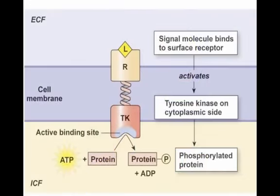Let's look at an example: a tyrosine kinase complex. This is the extracellular side; this is the cell membrane — the barrier for the ligand, because this ligand cannot cross. So it's going to have to have some kind of signal transduction in order to get its message to the intracellular side. Here's the ligand binding to the receptor, and when it binds, it causes this whole thing to change shape and activates the tyrosine kinase enzyme. Tyrosine kinase binds a protein and ATP, uses the energy from ATP along with that phosphate that gets stripped off, and phosphorylates this protein. ADP is left over and released.